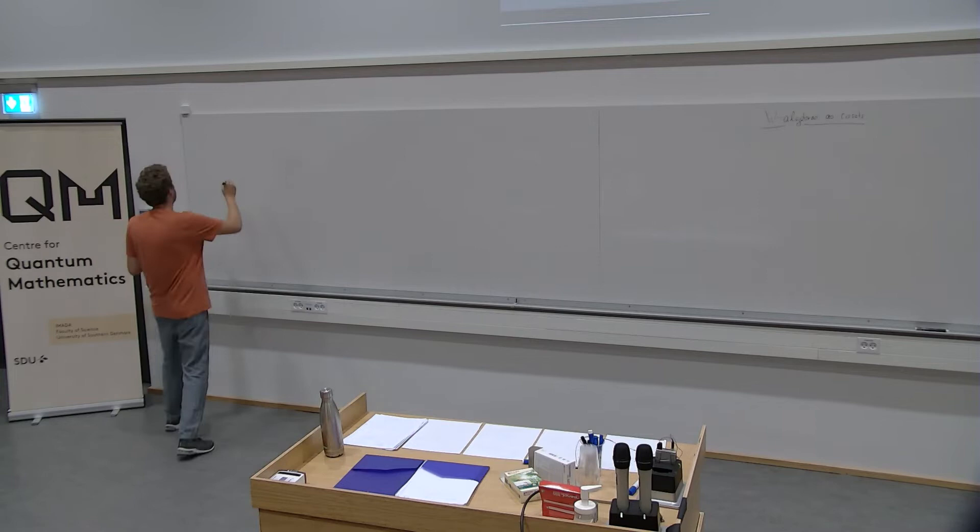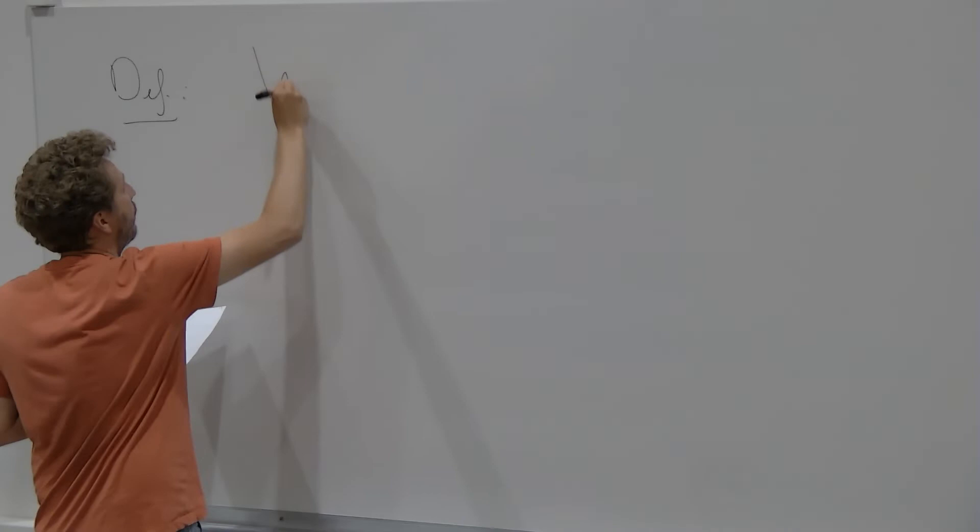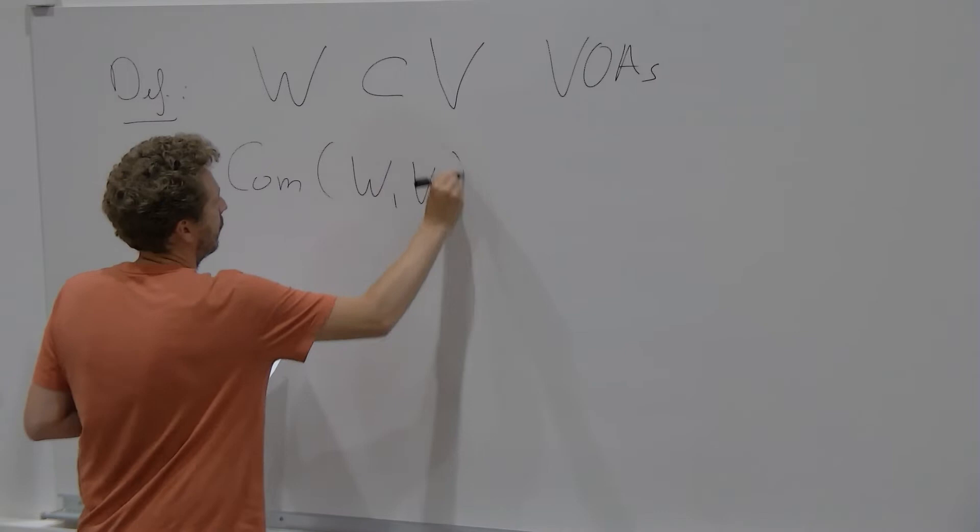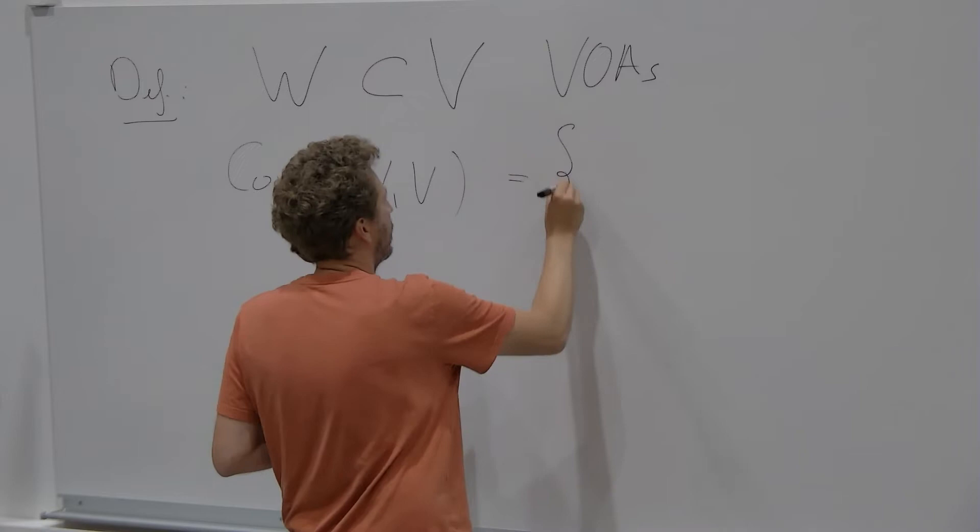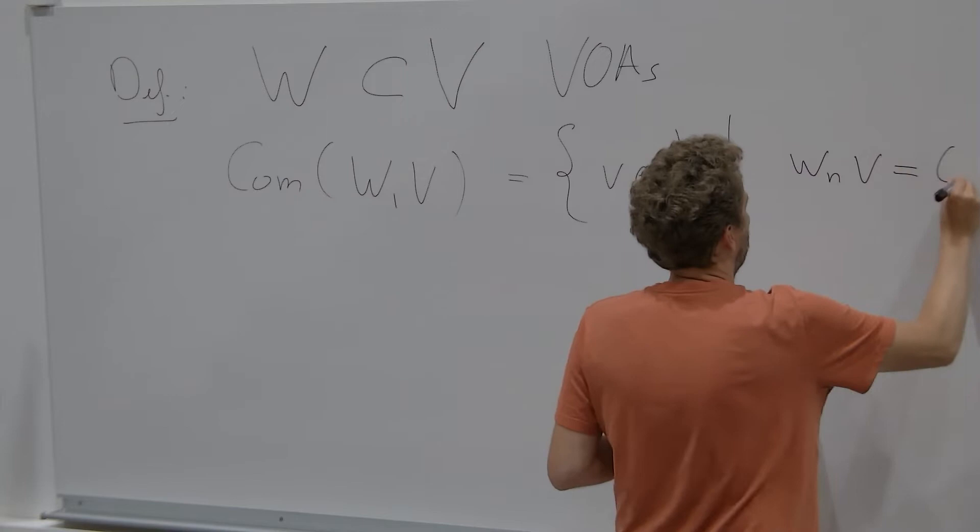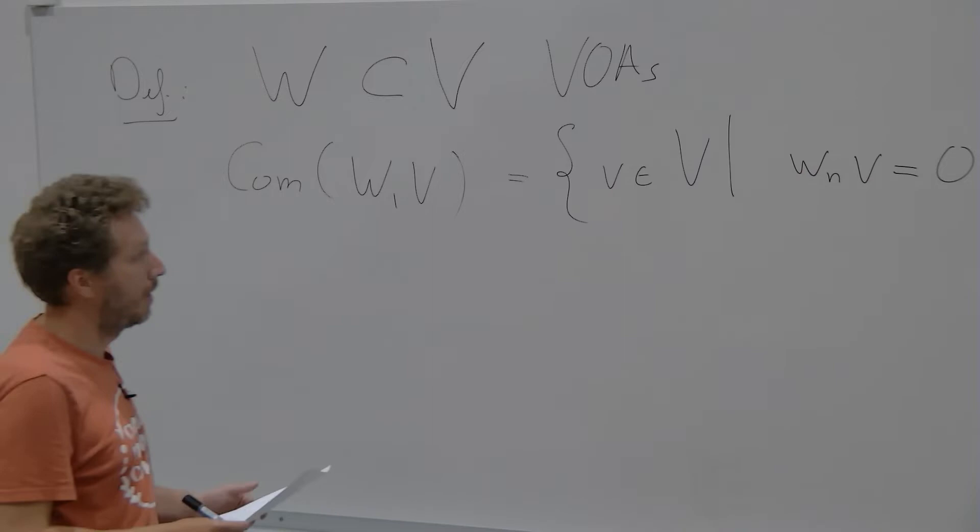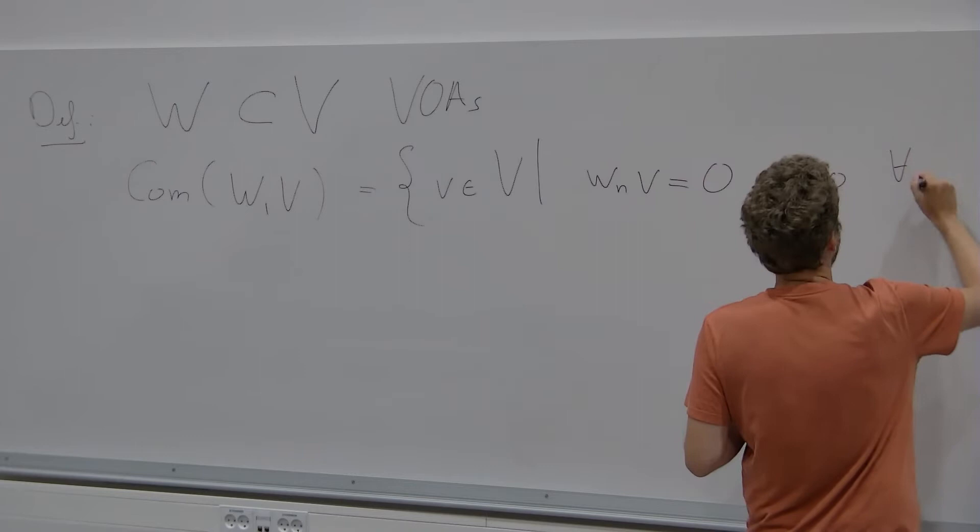Anyway, let me go on with cosets. First, let's define what a coset is. So what we have is we have a big VOA, V, and a sub algebra, W, a sub VOA, W. And now we define the commutant or coset of W in V to be the set, first of all, the set of the underlying vector space is the subspace of V of those vectors that are vacuum vectors for the sub algebra. What does it mean to be a vacuum vector? It means that any non-negative mode acts as zero. And this has to hold for all W in W.